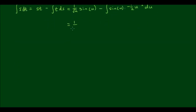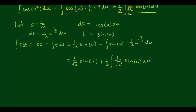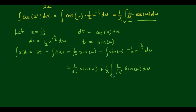Tidying this up, we get 1 over root(u) times sin(u) plus one half times the integral of 1 over u to the three halves times sin(u) du. Scrolling back, we can see that these two parts are very similar to each other, and we can't actually find a closed form integral for this — it will keep on integrating forever, producing higher powers of u inside the square root and alternating sines and cosines.